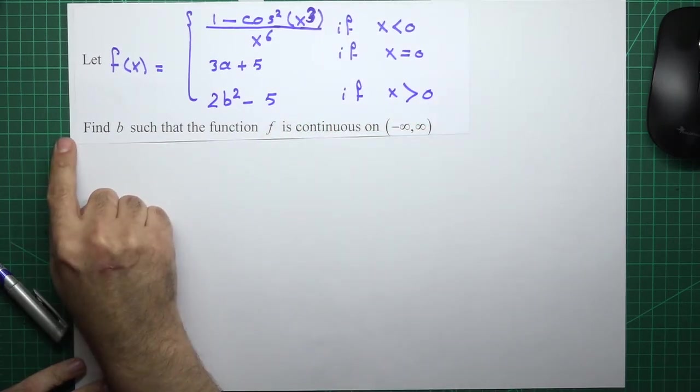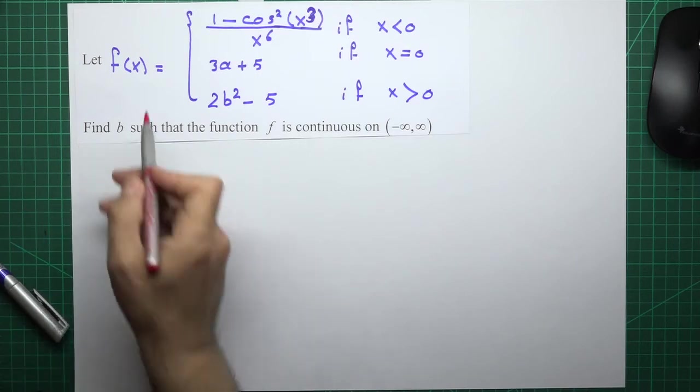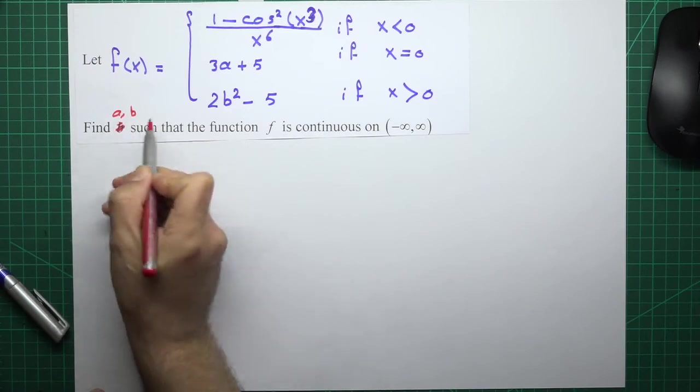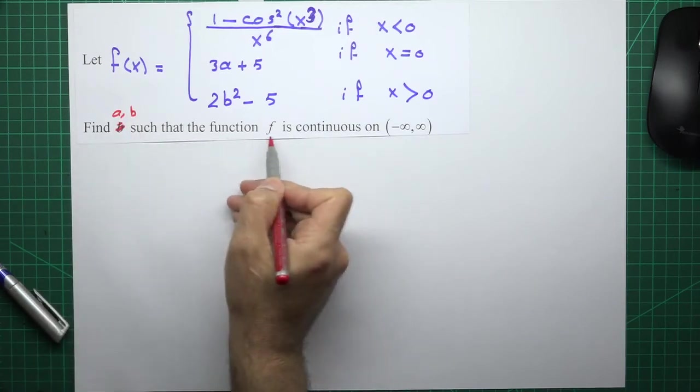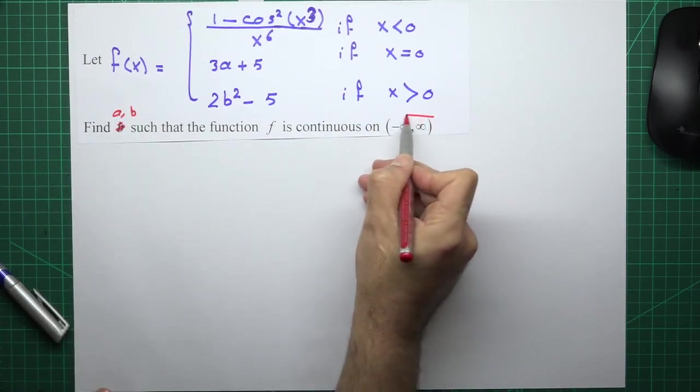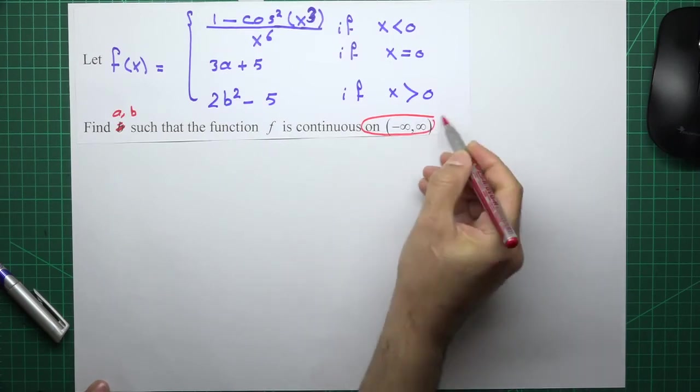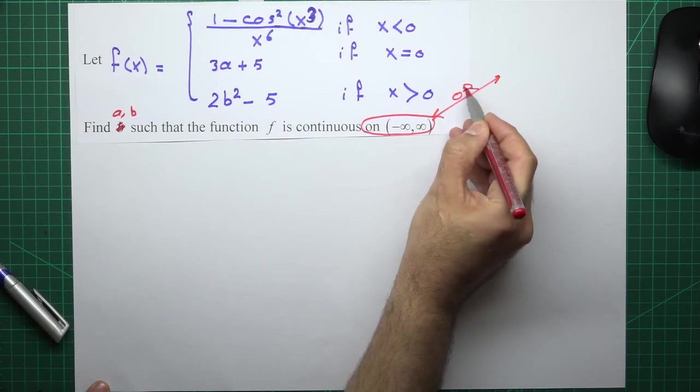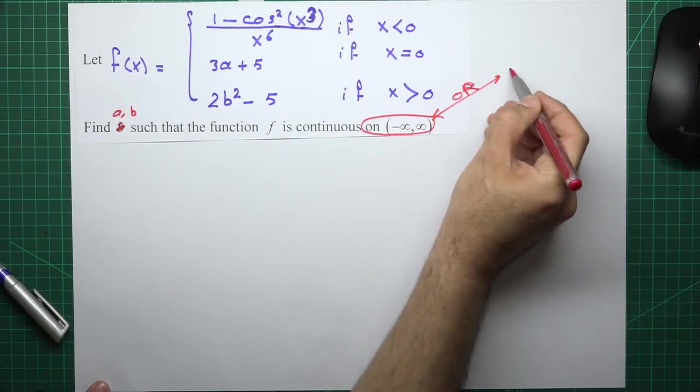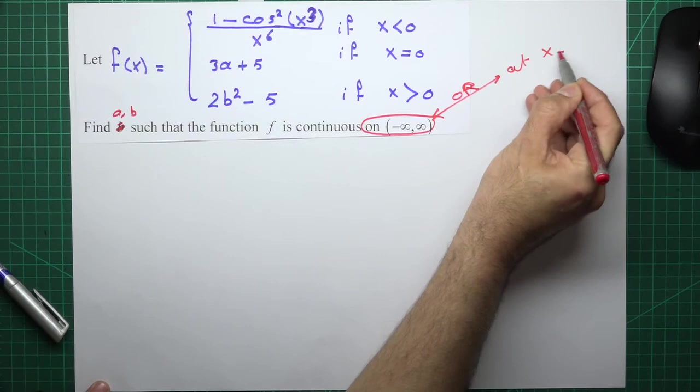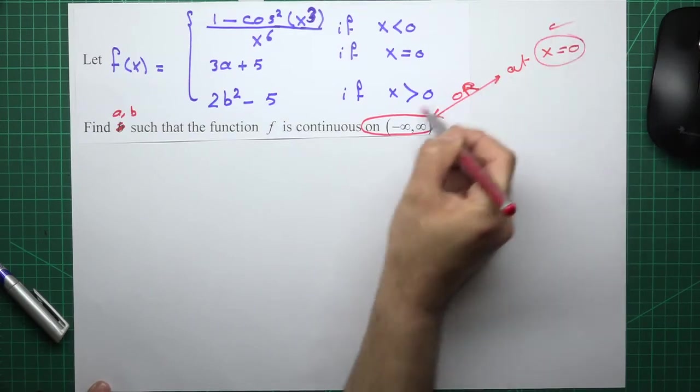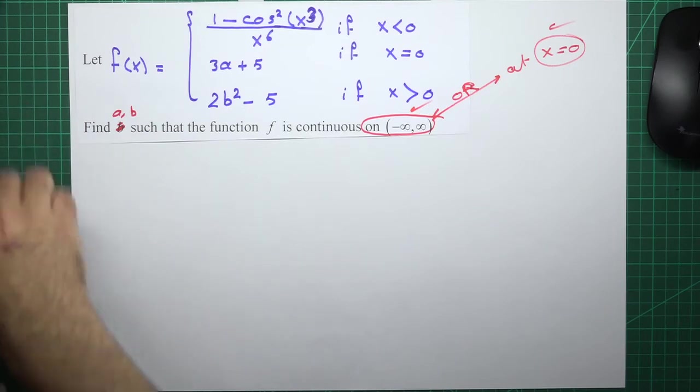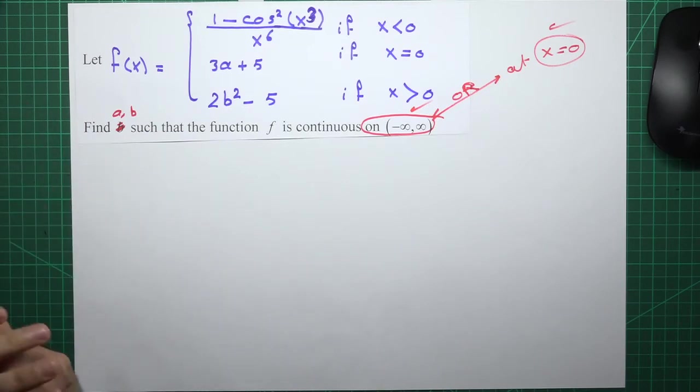Find a and b such that the function f is continuous on this interval, or continuous at x equals 0. This or this, same treatment, same solution.